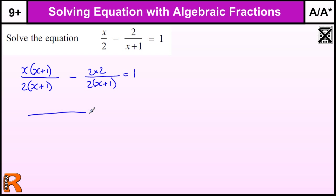So I end up with the same denominator, 2(x+1). Multiplying out the numerator, I've got x² + x - 4. That equals 1.